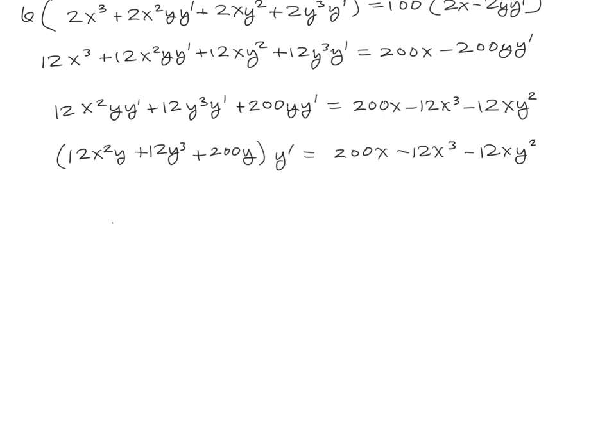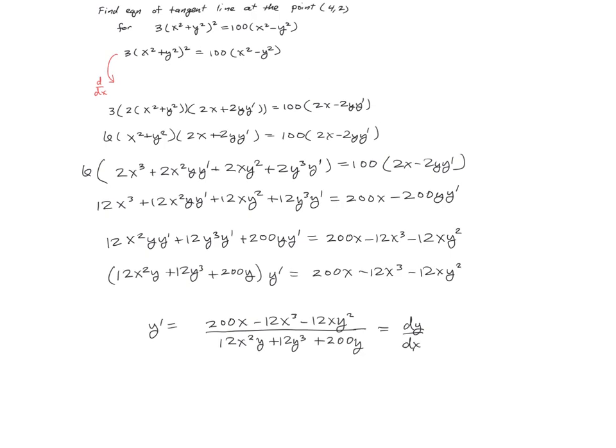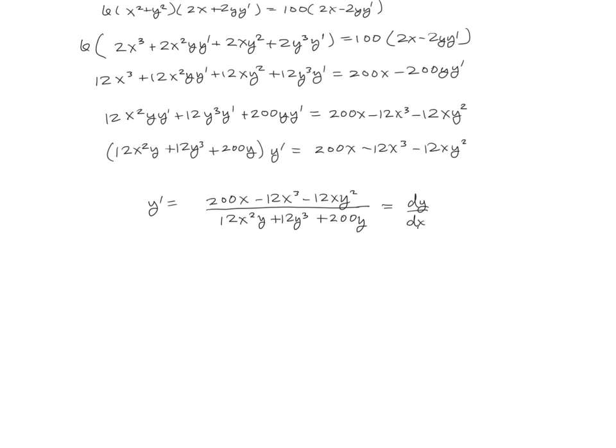And finally, divide both sides. We've got 200x minus 12x³ minus 12xy² divided by 12x²y plus 12y³ plus 200y. And that is the formula for dy/dx or y prime. And now we need to evaluate this at the point (4, 2).